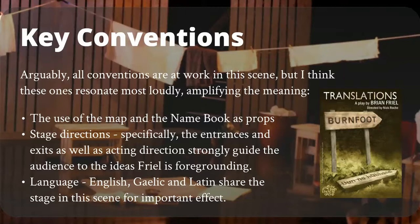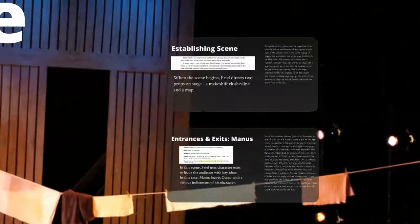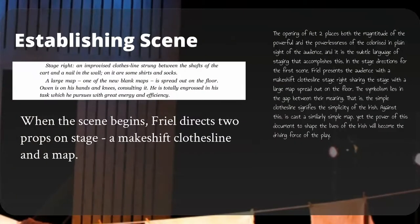The use of the map and the name book as props early in the scene have symbolic meaning worth discussing. The use of stage direction — specifically the entrances and exits — as well as acting direction, strongly guide the audience to the ideas that Friel is foregrounding. In the opening of the scene, Friel has designed the set with two important elements: firstly, a makeshift clothesline, and secondly, a map. It's really important that he puts these two side by side.